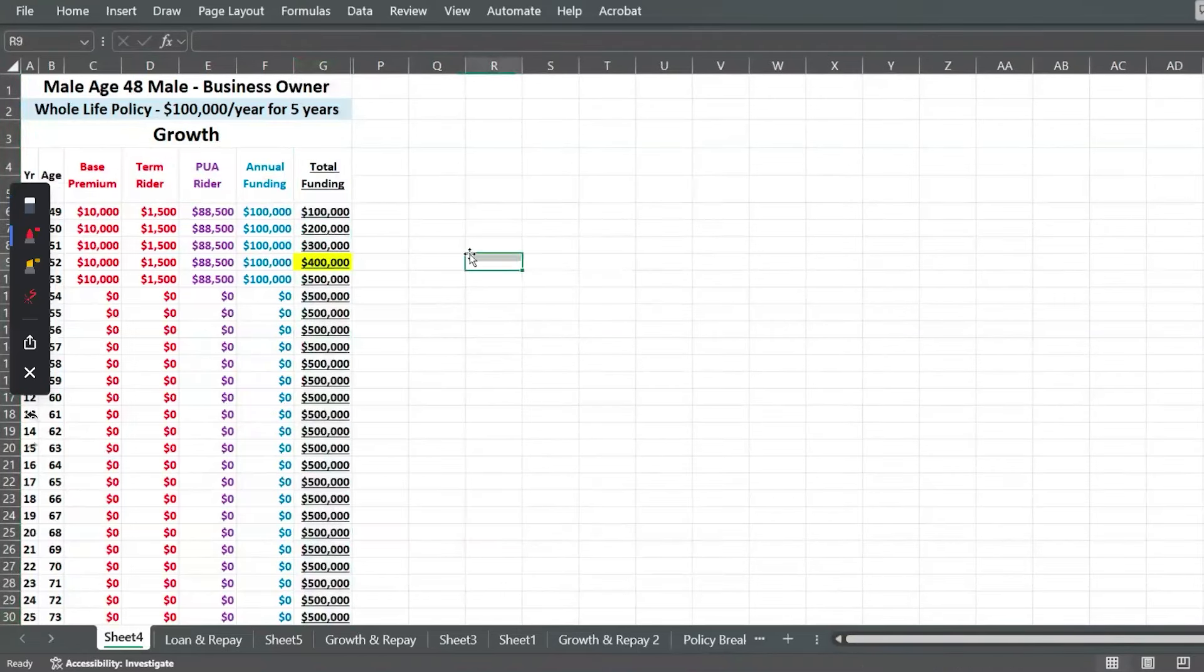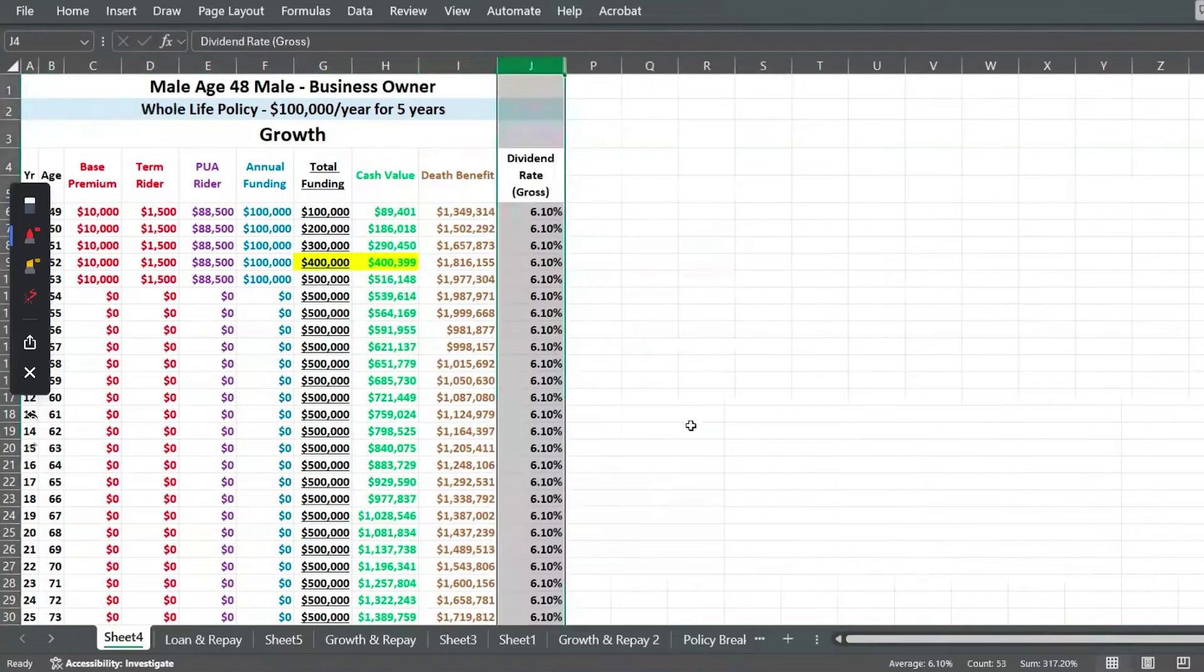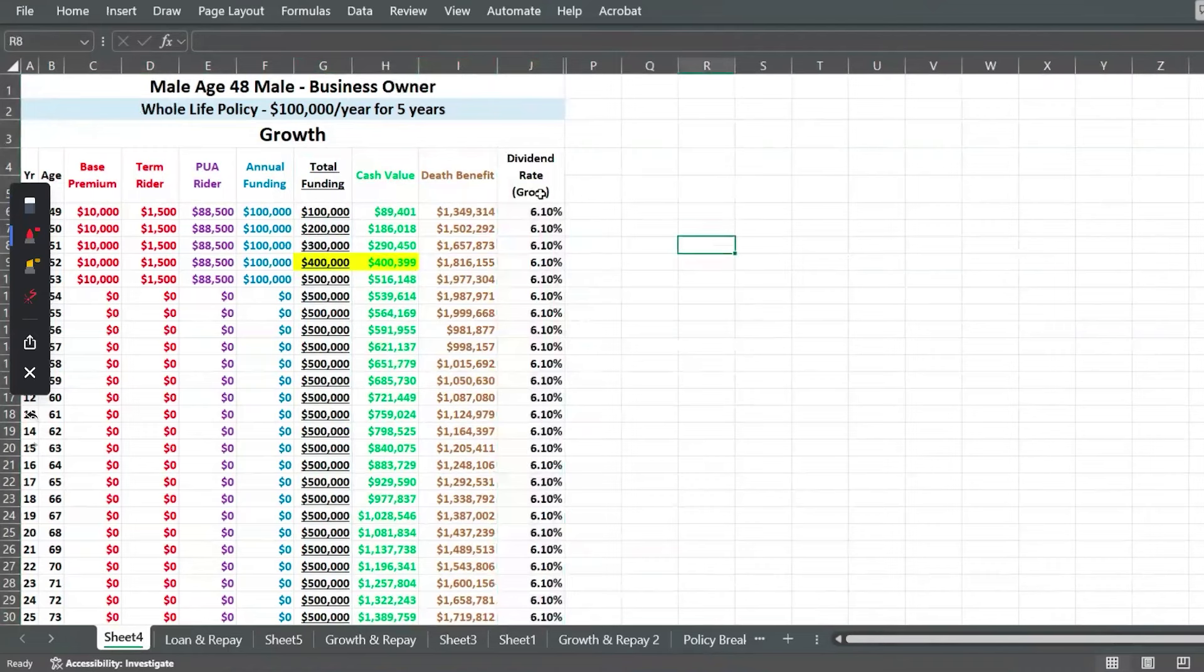Then your cash value and death benefit break even at year four. The illustration we had: $651,000 year 10, there we go. This company has a dividend rate of 6.10%.